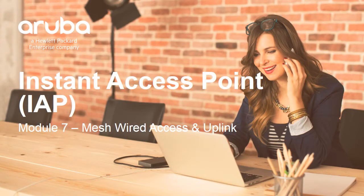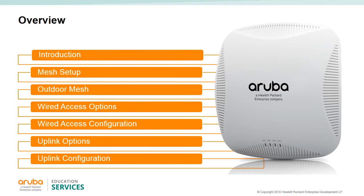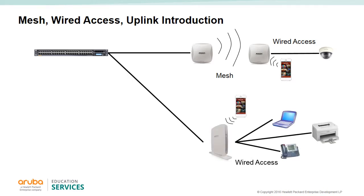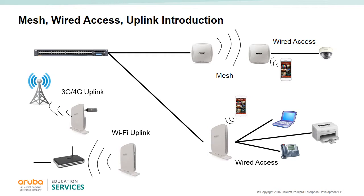Module 7: Instant AP Mesh, Wired Access, and Uplink. In this module we'll do a basic introduction and look at the mesh setup for IAPs, outdoor mesh options, wired access options and configuration, and uplink options. Mesh allows the uplink to be Wi-Fi instead of a physical cable. There are three choices for uplinks: Ethernet, 3G/4G, and Wi-Fi.